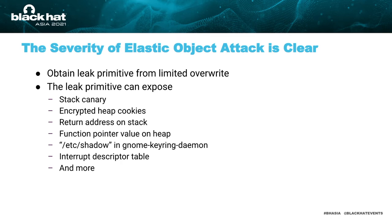The severity of this attack is obvious. If the adversary has a limited write primitive on kernel heap — by triggering vulnerabilities like slab out-of-bounds write, use-after-free, or double-free — they can transfer this write primitive to obtain a leak primitive. This capability enables leaking of stack canary, return address, encrypted heap cookies, function pointers, /etc/shadow, interrupt descriptor table, and many other sensitive data. With this sensitive data in hand, it becomes easier for the attacker to perform the following exploitation steps.